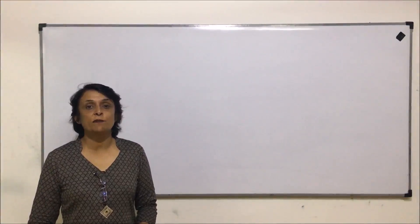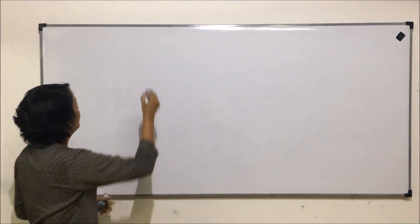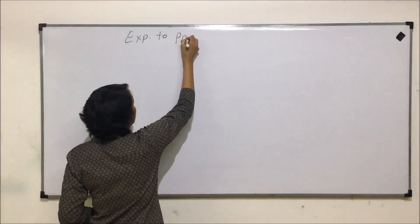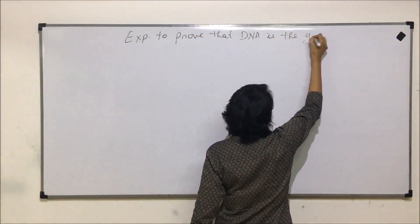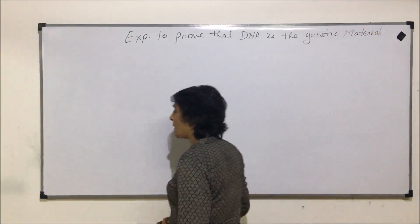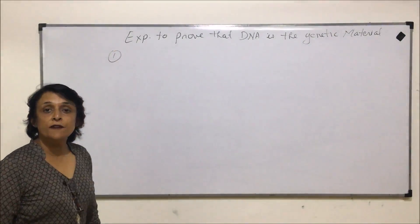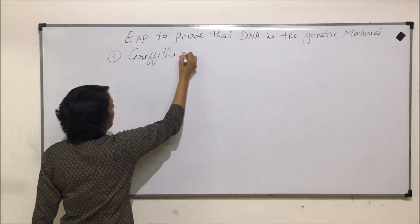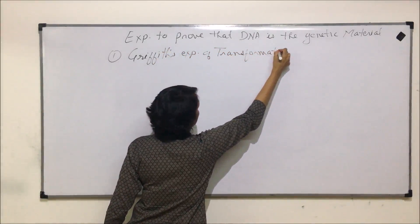We are starting with the experiments which were performed to prove whether DNA is the genetic material or not. We are talking about those experiments which were performed to prove that DNA is the genetic material. The first experiment considered as the first step is known as Griffith's experiment of transformation.